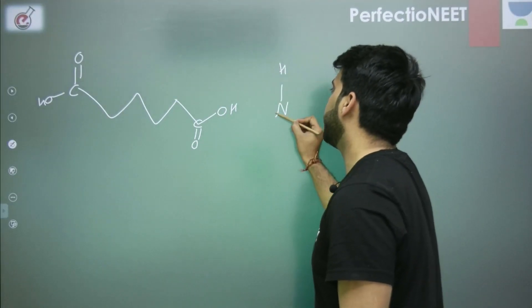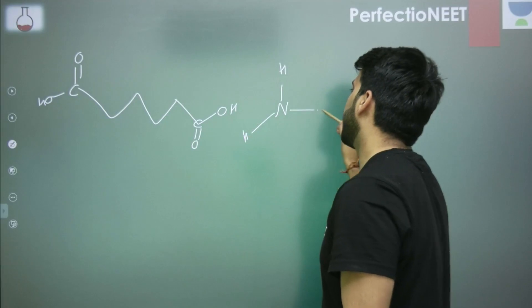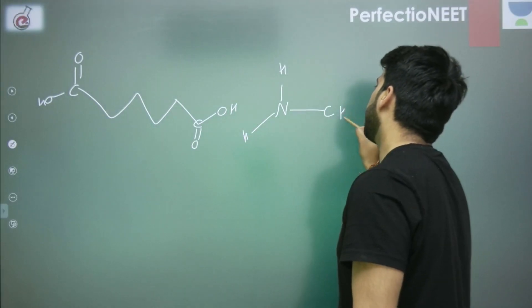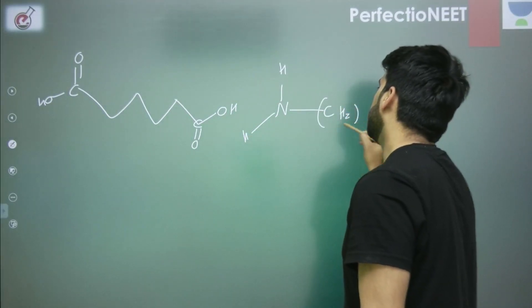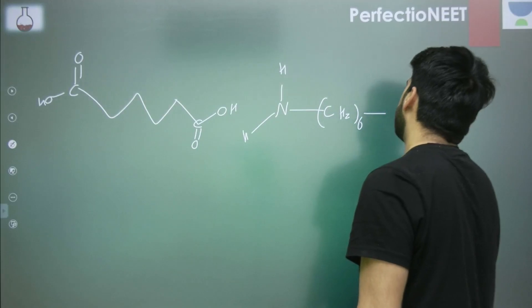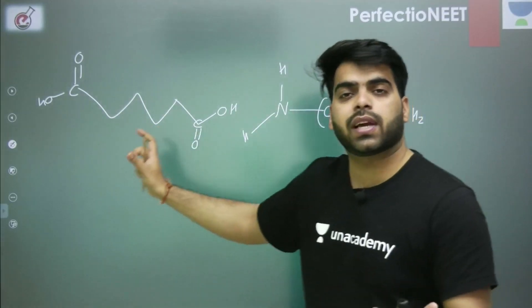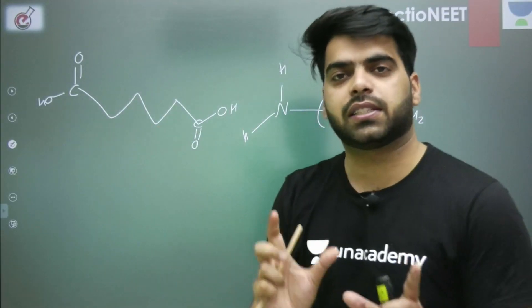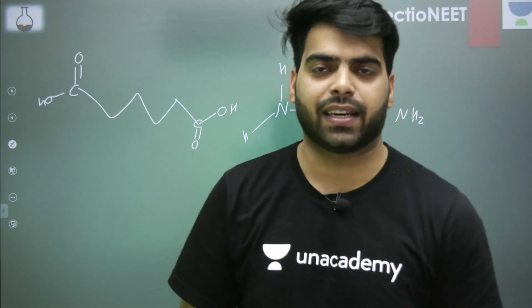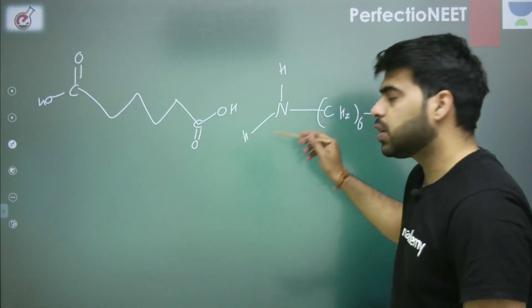We also have one amine — this amine is also of the form (CH₂)₆-NH₂. Similarly, both sides have a 6-carbon chain. That is the reason we call it nylon 6,6 — that's what the 6-6 represents.